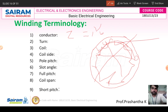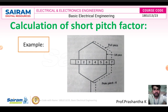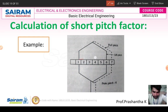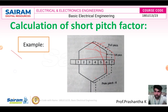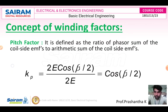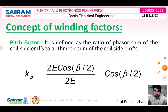Coil span is the span from one conductor in one slot to another conductor in another slot across a pole. In short pitch, instead of connecting a conductor to the full-span slot, it is connected to a closer slot. This creates an angle α, and the short pitch relationship involves α/2. That is the concept of short pitch.